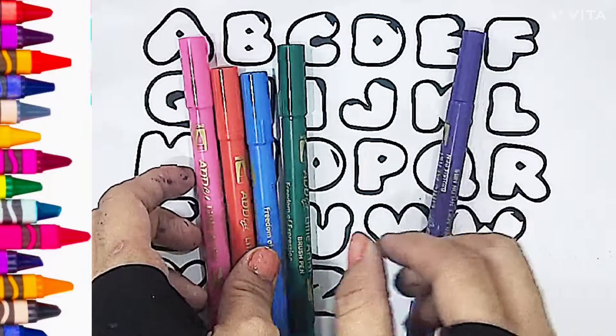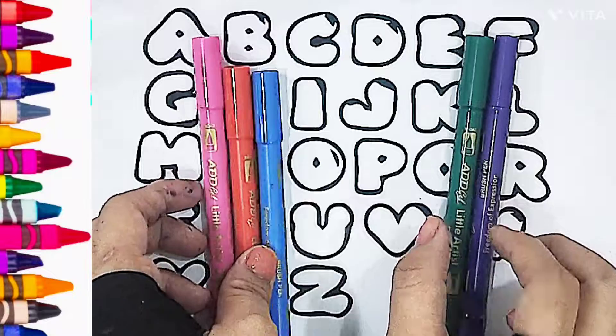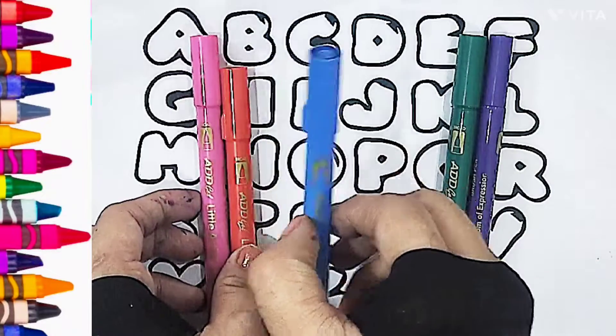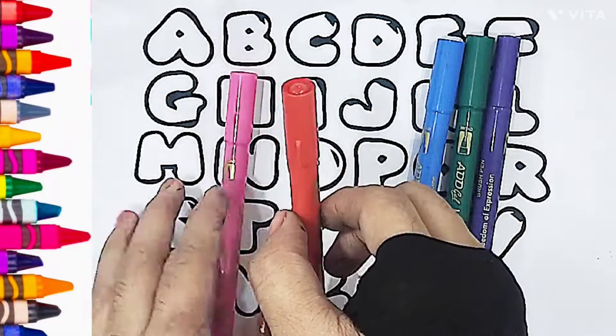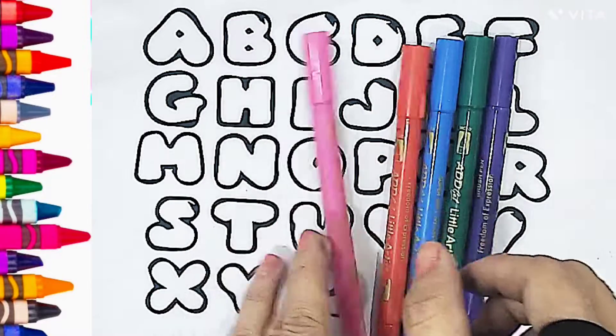Violet color, dark green color, sky blue color, red color, pink color. These are the colors we'll use to color the alphabet letters.